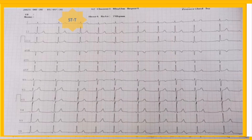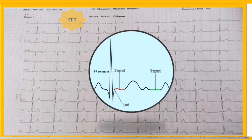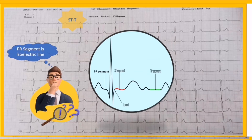The next part is ST segment and T wave, also known as STT changes. They occur after ventricular depolarization. The ST segment is the time of electrocardiographic silence, while the T wave represents the period of ventricular repolarization. The junction between the end of the QRS complex and the beginning of the ST segment is termed the J point. The J point plays an important role in detecting ST elevation or depression.